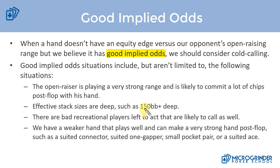Another good implied-odds situation is when there are bad recreational players left to act who are likely to call as well, which increases the potential amount we can win. Lastly, when we have a weaker hand that can make a very strong hand post-flop — such as two connectors, two-to-one gappers, small pocket pairs, and suited aces — those types of hands also boost our implied odds. As we progress in the course, you'll see exactly what I mean with those hands.